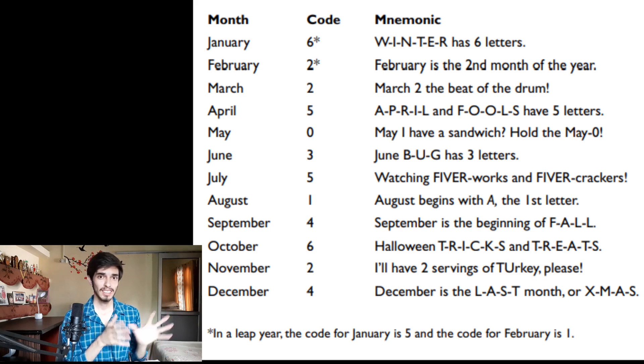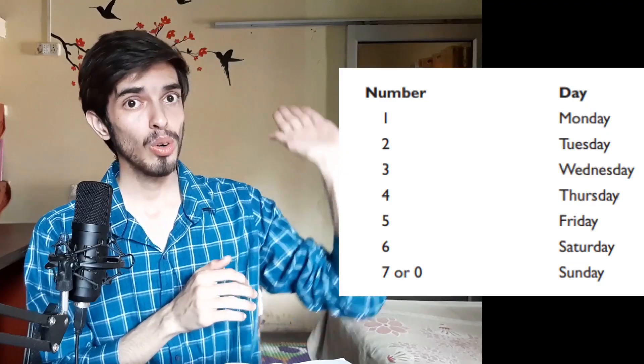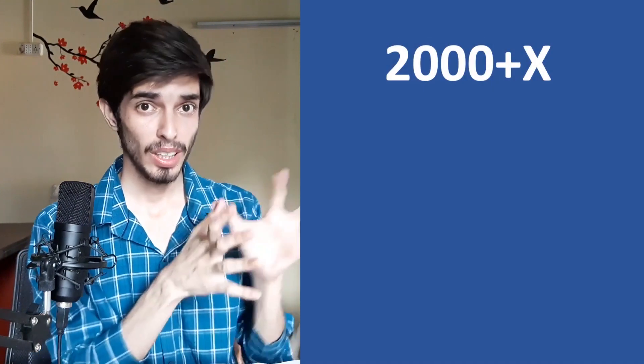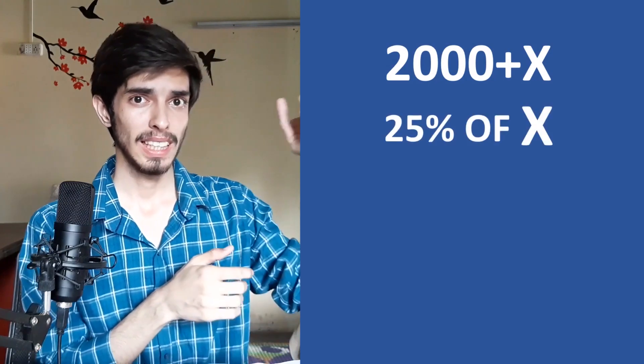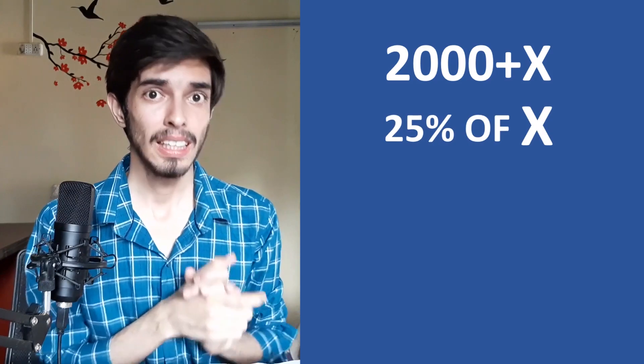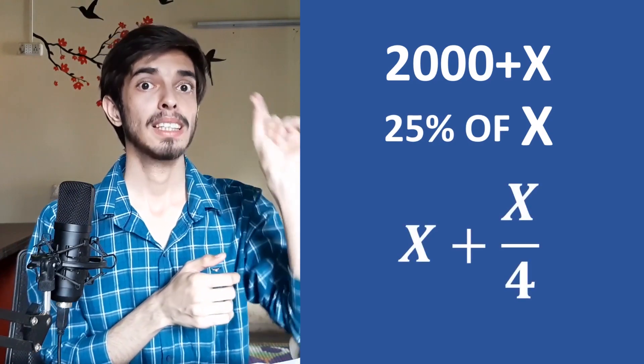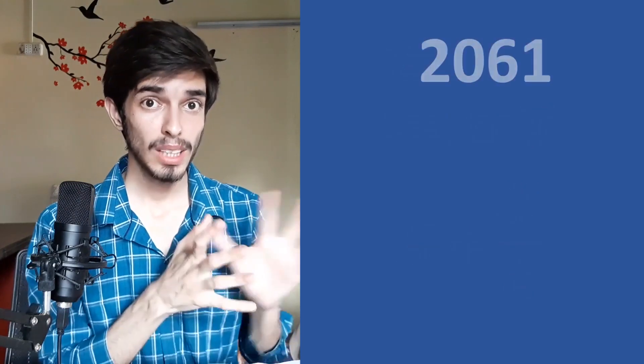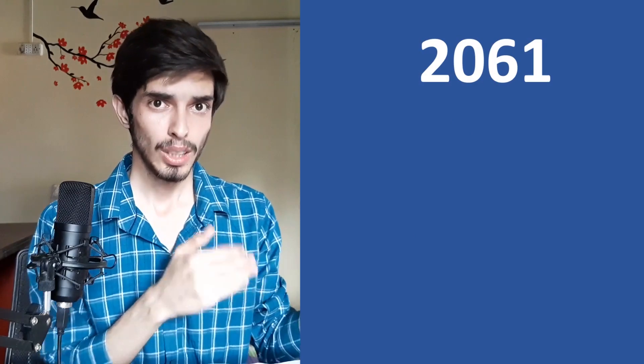If you have memorized the month codes, congratulations — you can now do this trick fluently. You have already memorized the day code. Every year is also associated with a code, which we can calculate easily. To find the year code of any date between 2000 and 2099, take the last two digits X and calculate X plus X divided by 4 (dropping any decimal). Let's calculate the year code of 2061.